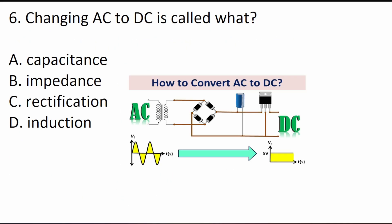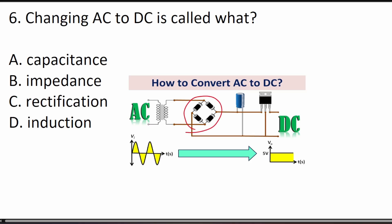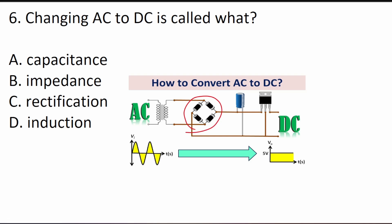Question 6 asks: changing alternating current to direct current is called what? AC is alternating current and DC is direct current. On a graph, alternating current looks like a sine wave going up and down, whereas direct current is a flat line. The device that converts AC to DC is called a bridge rectifier, so the process of changing AC to DC is called rectification. The answer is C.